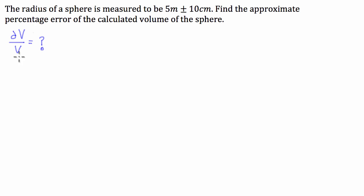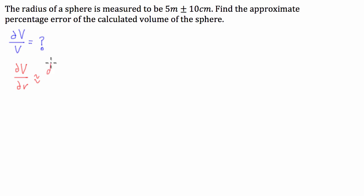The way we're going to start this is we're going to use the approximation relationship using calculus. What we're going to say is the incremental change in volume divided by the incremental change in radius can be approximated by the derivative of volume with respect to radius evaluated at the initial radius.